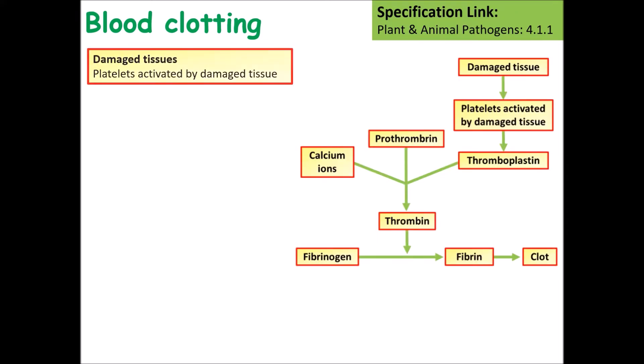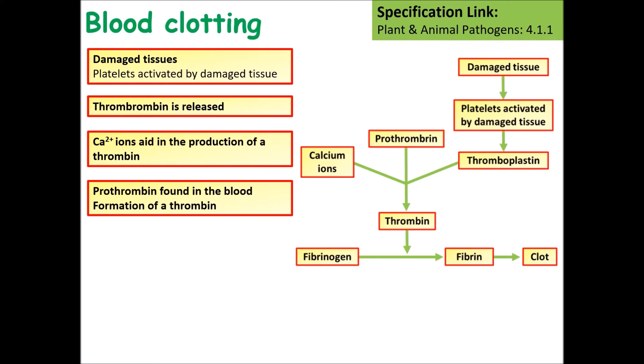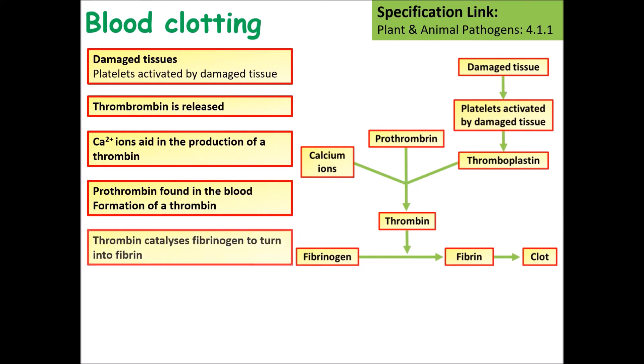Looking at the process step by step: damaged tissues activate your platelets; a chemical called thrombin is released; calcium ions aid in the production of thrombin; prothrombin found in the blood forms thrombin; and thrombin catalyzes fibrinogen to turn into fibrin, which in turn forms a blood clot.